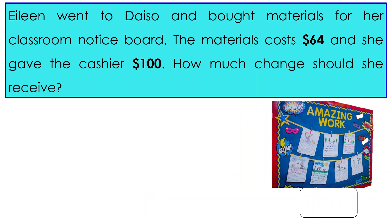Exercise 3. Eileen went to DZO and bought materials for her classroom notice board. The materials cost $64 and she gave the cashier $100. How much change should she receive?